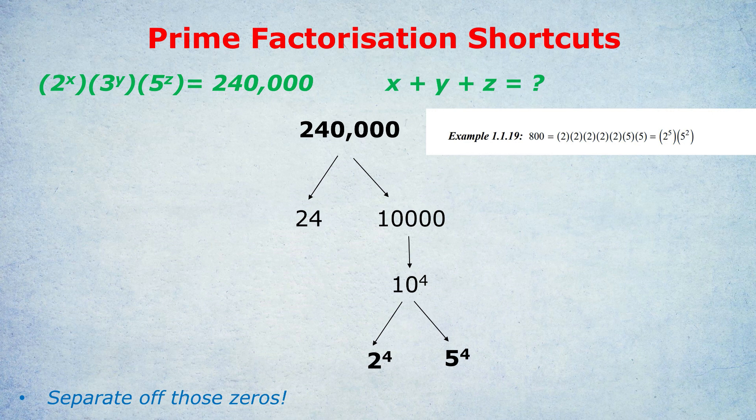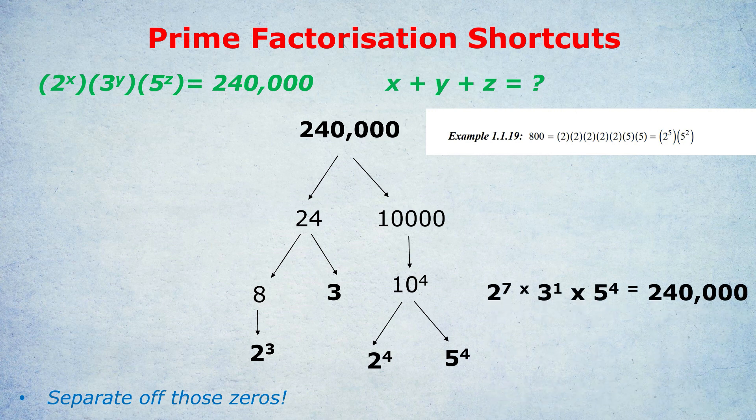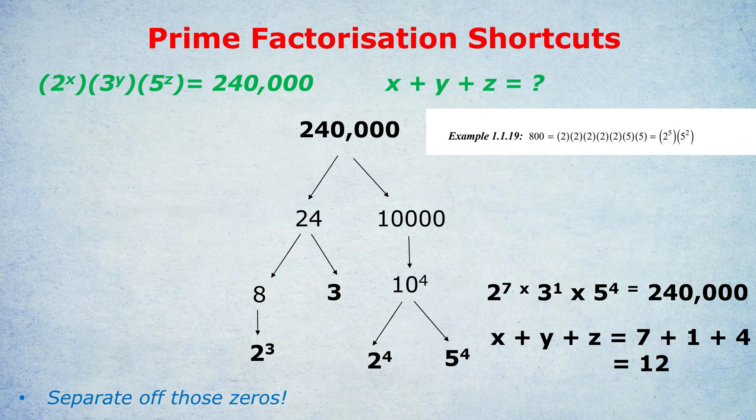And now breaking up 24 is simple. 24 is 8 times 3. 8 as you know is 2 cubed, and 3 is already a prime number. So we have prime factorized in a matter of about 30 seconds or less, when dividing by 2 you would be here for hours. Gathering these numbers together professionally, you can see that we have 7 twos, 1 three, and 4 fives. By comparing those numbers to the x, y, and z on the left, we can see that x is 7, y is 1, and z is 4. Adding those up, we have of course 12, and that is the answer to the question.